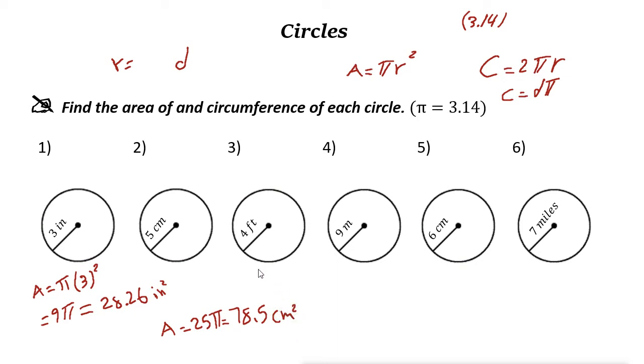This one the radius is 4, so the area is 16 pi. This one is 81 pi feet squared. This one is 36 pi square centimeters, and this one is 49 pi square miles.